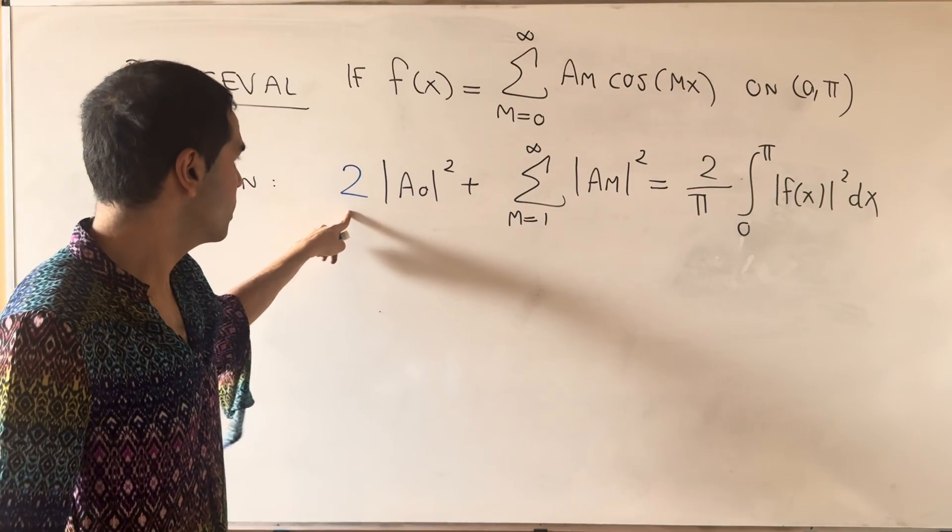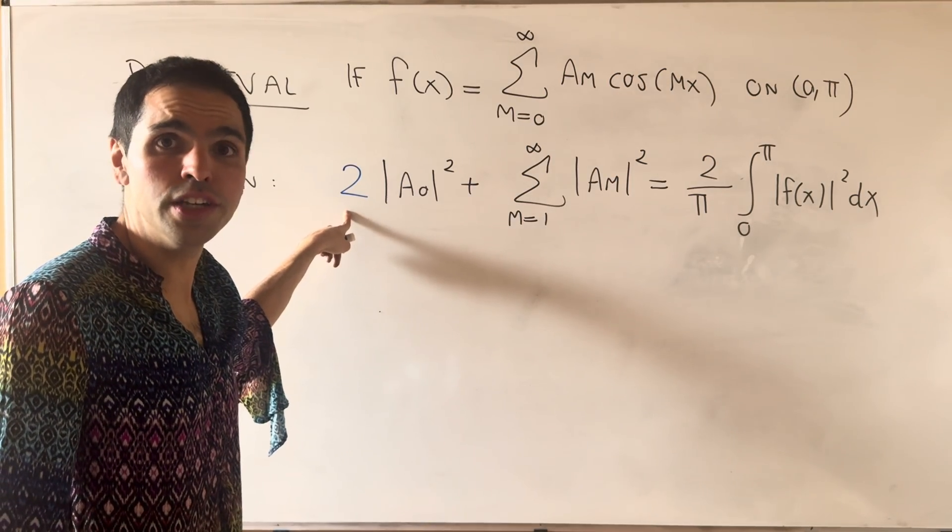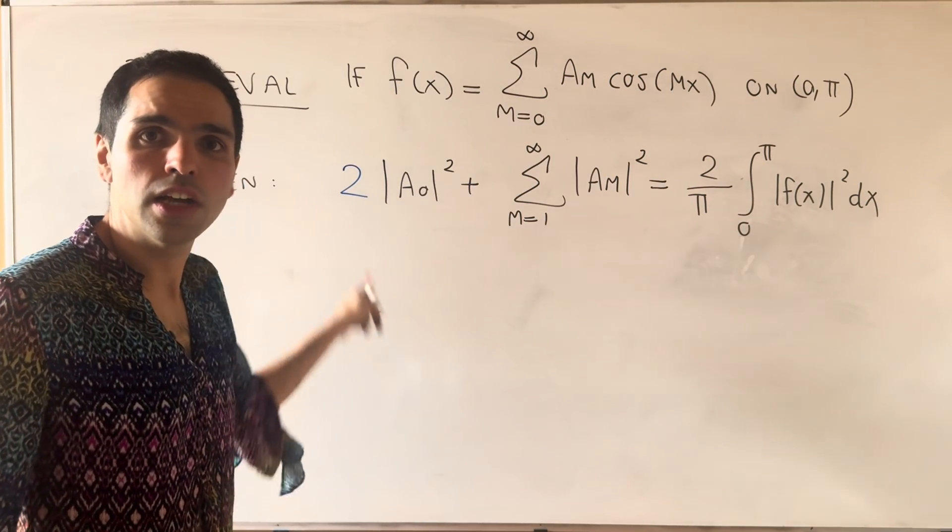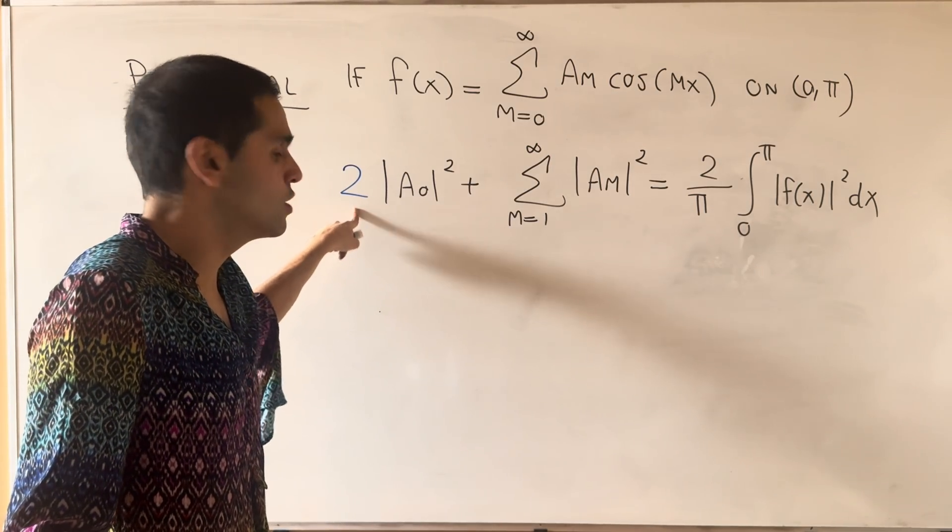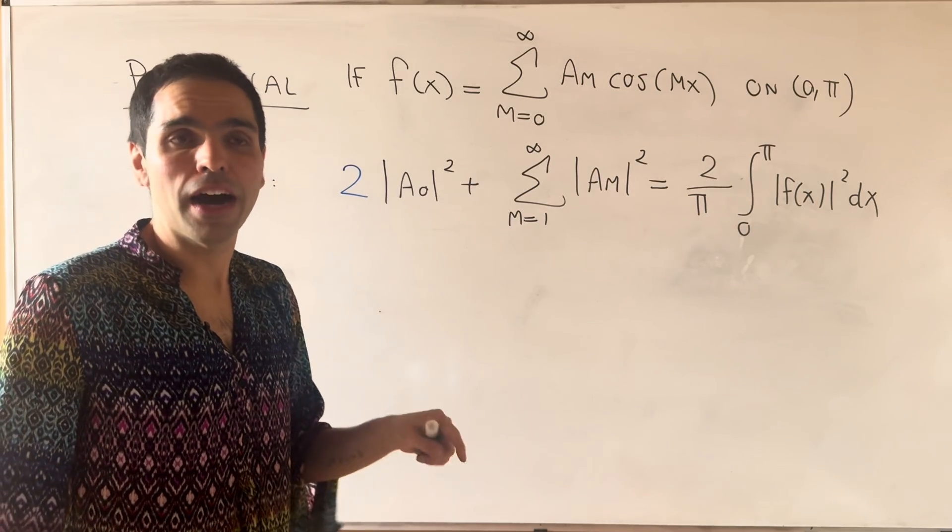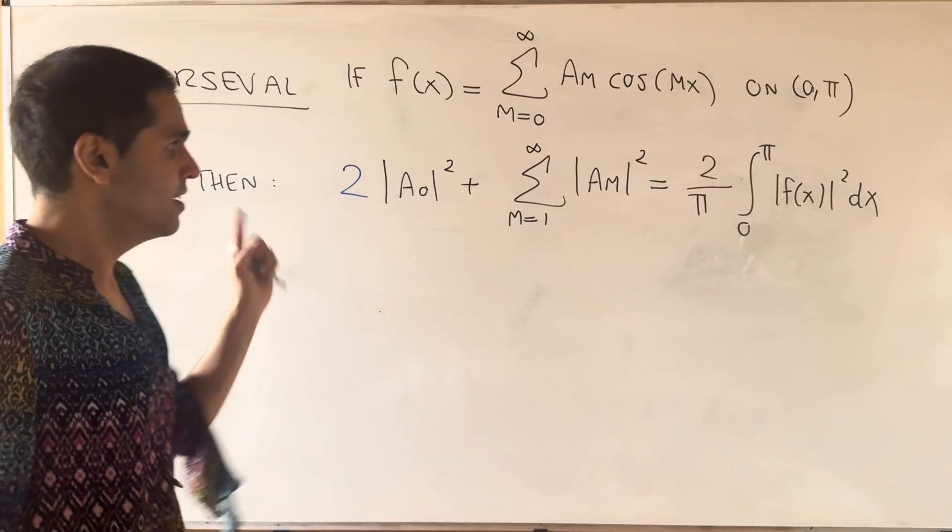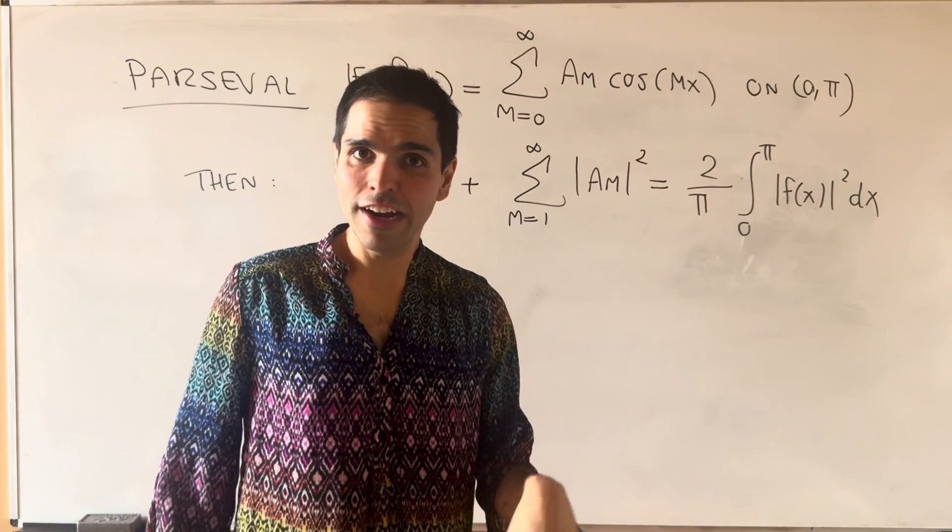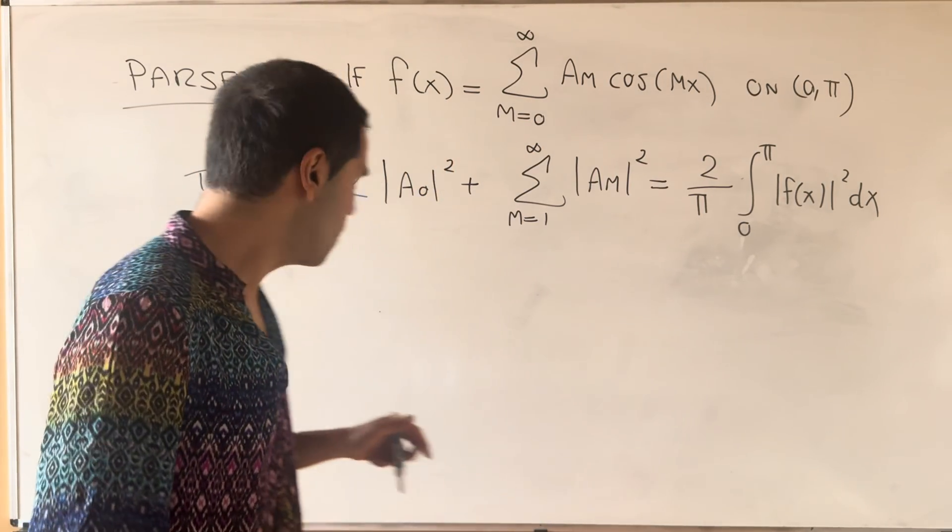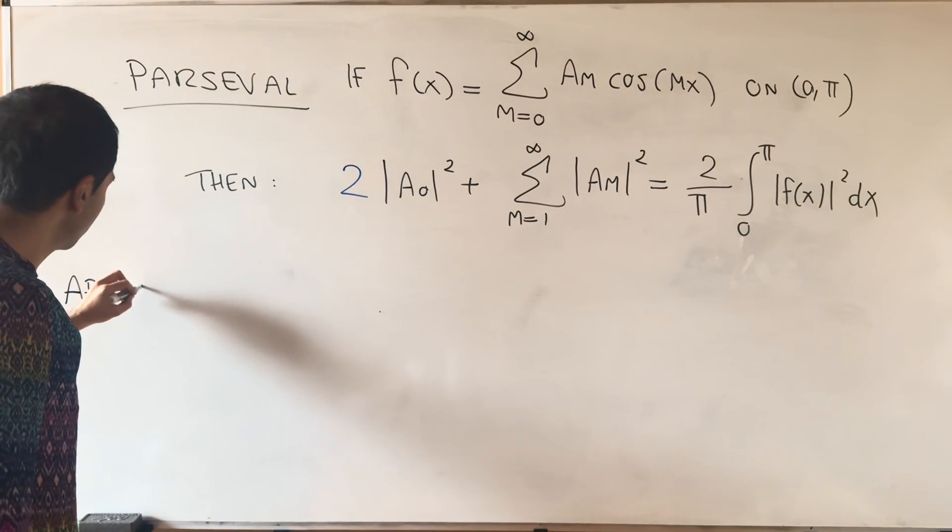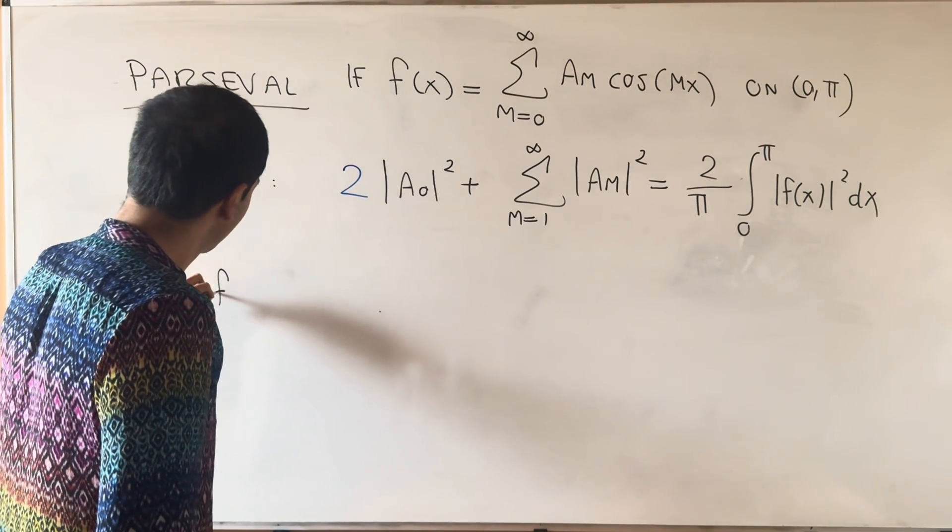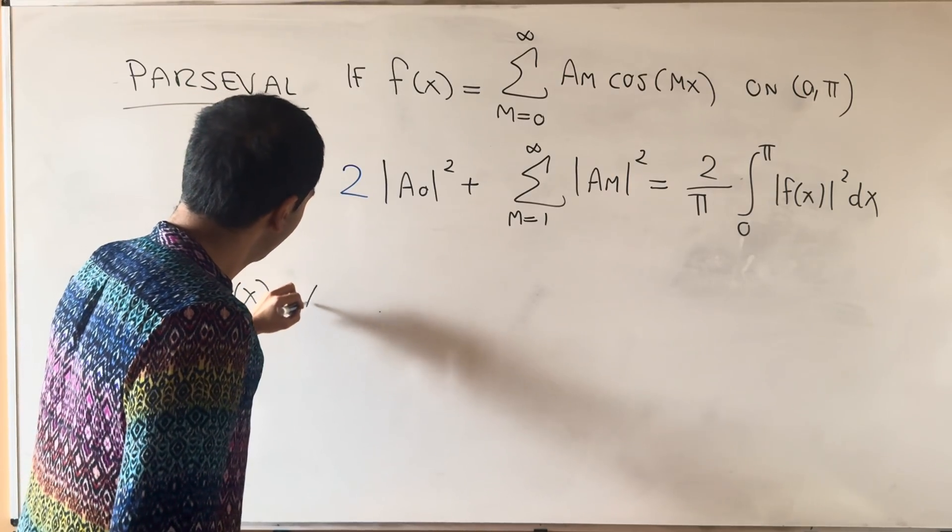So this is what you would get if you divide Parseval's identity similar to the previous videos in the playlist. Which, once again, the modification of 2 here comes from the fact that cosine mx dotted with itself, in the special case is pi, and not pi over 2. And now, let's apply it to a very special function. So let's apply this to the function f of x equals x squared.